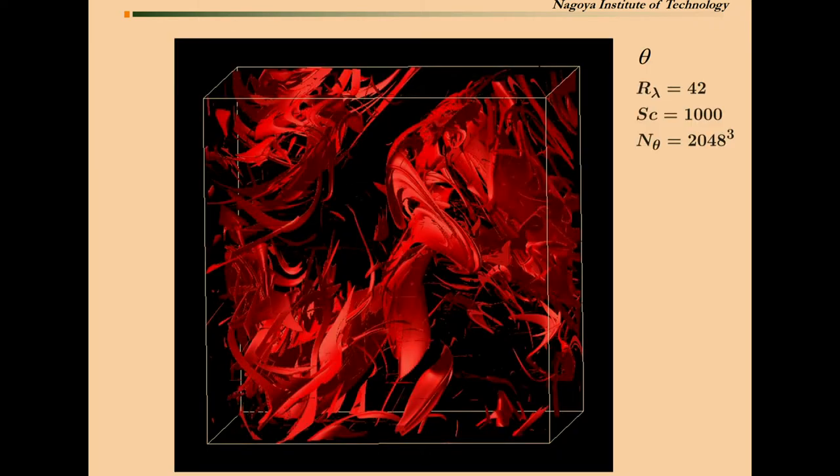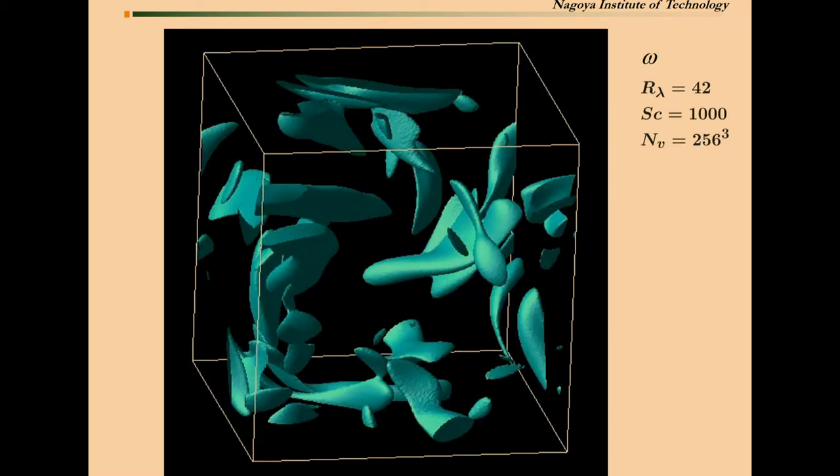This is an example of snapshot isocontour of the scalar. You can see that scalar field is highly squeezed in small scales. However, this is the vorticity field. You can see, very smooth, thick. You can see that there is clear scale separation in this problem.